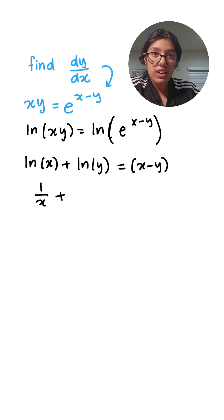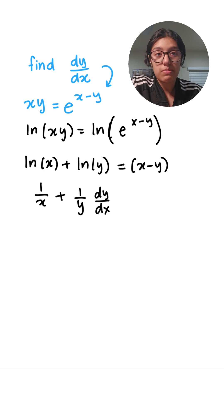So we're going to take the derivative as we would regularly do. Natural log of y, which is one over y. But we're going to do dy over dx because we want to apply implicit differentiation since y is a function of x.